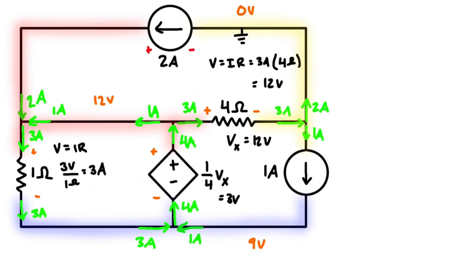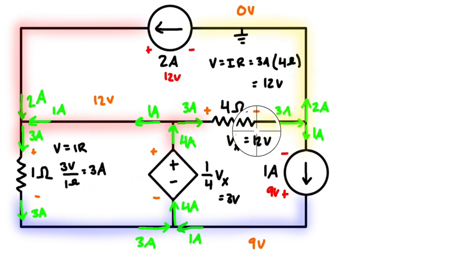The voltage drop across the top independent current source is 12 volts. The voltage drop across the other independent current source is nine volts, going from nine volts to zero. The voltage drop across the four-ohm resistor is 12 volts, across the dependent power source is three volts, and across the one-ohm resistor is three volts.